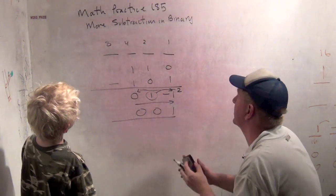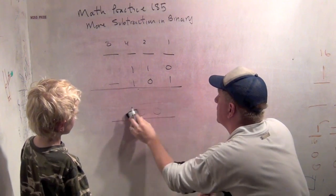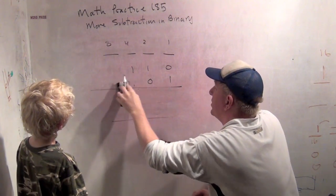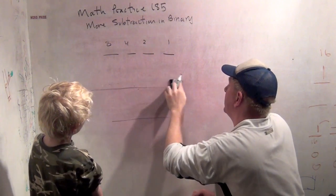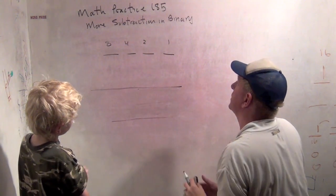So pick two numbers that you want to subtract. How about one, one, one minus three? Well, pick two numbers in base ten that you want to subtract and then we'll make them and then subtract them. How about 15 minus seven?